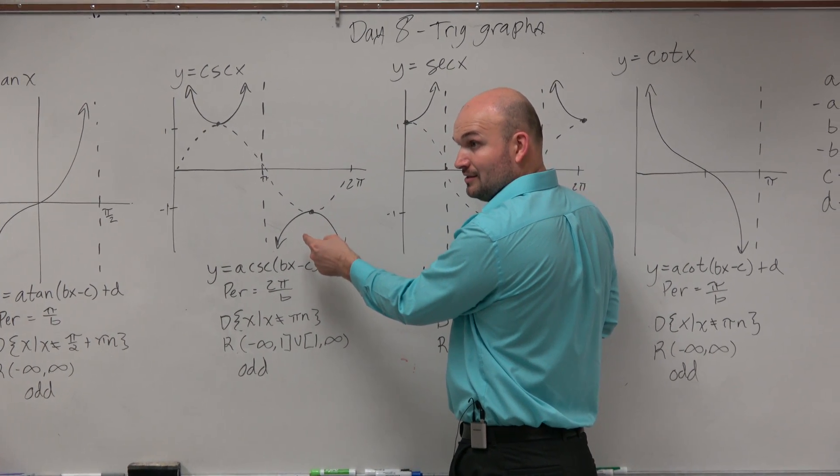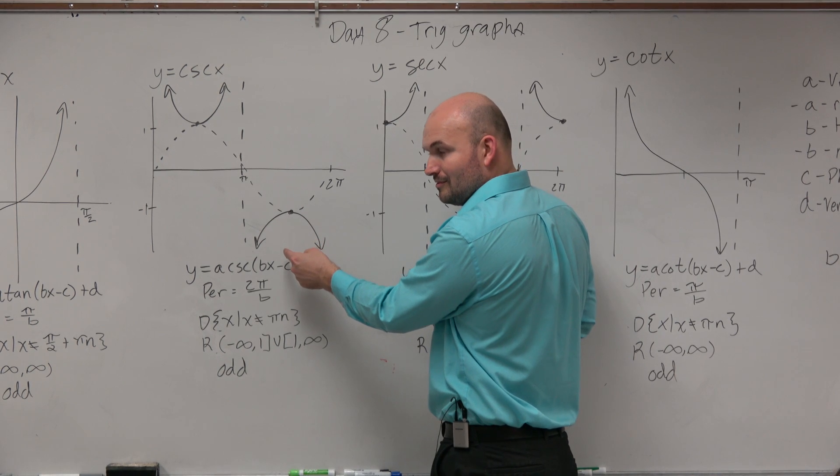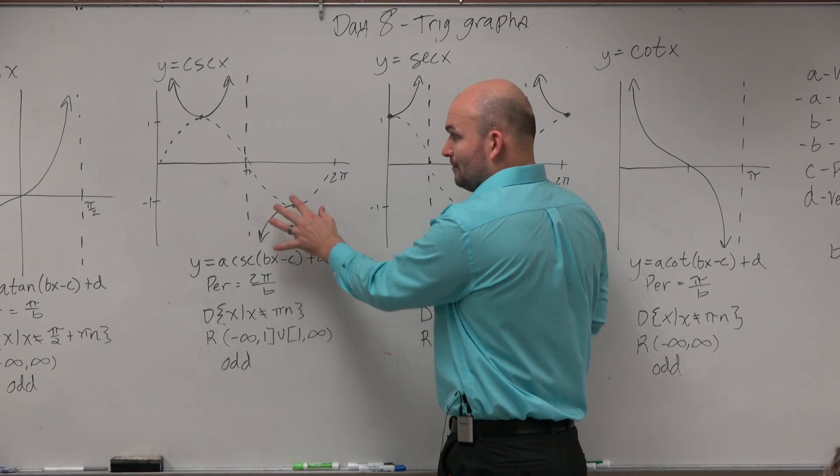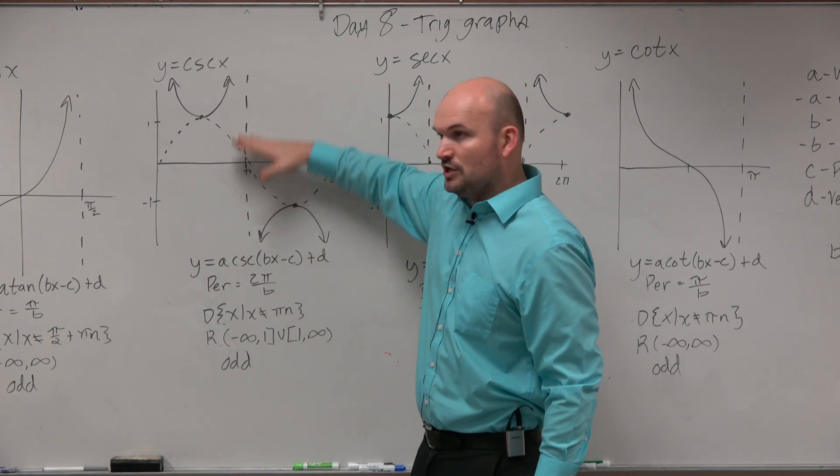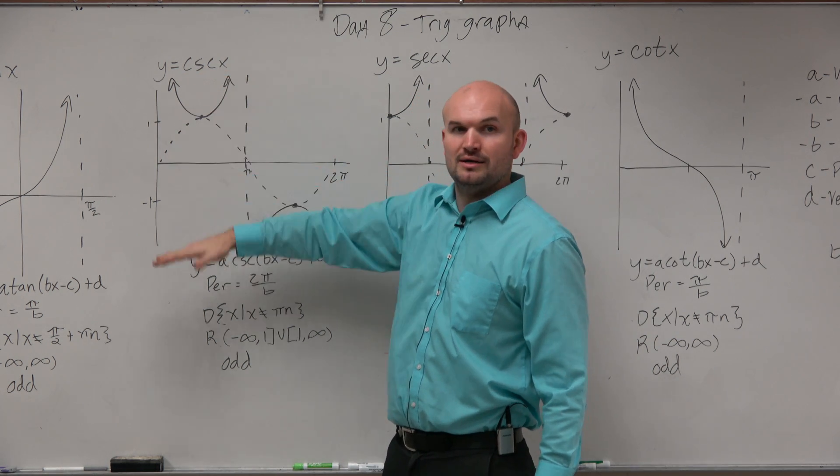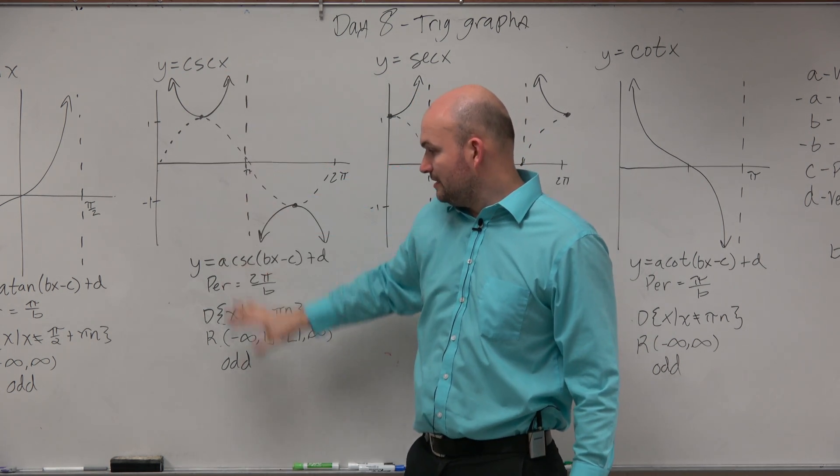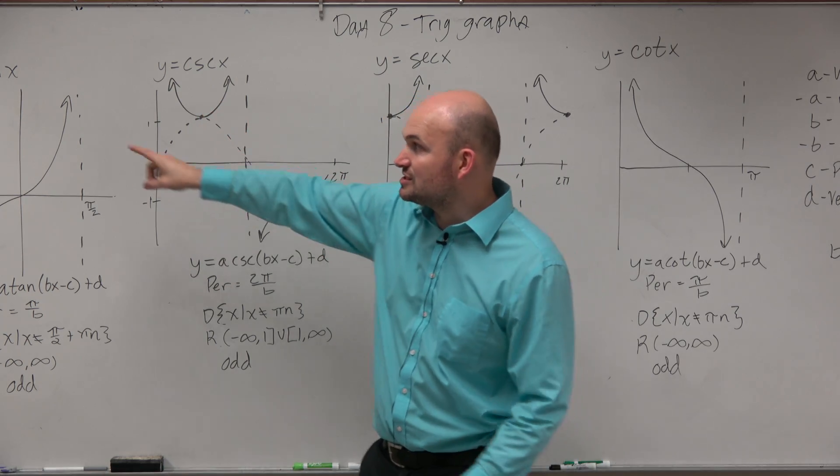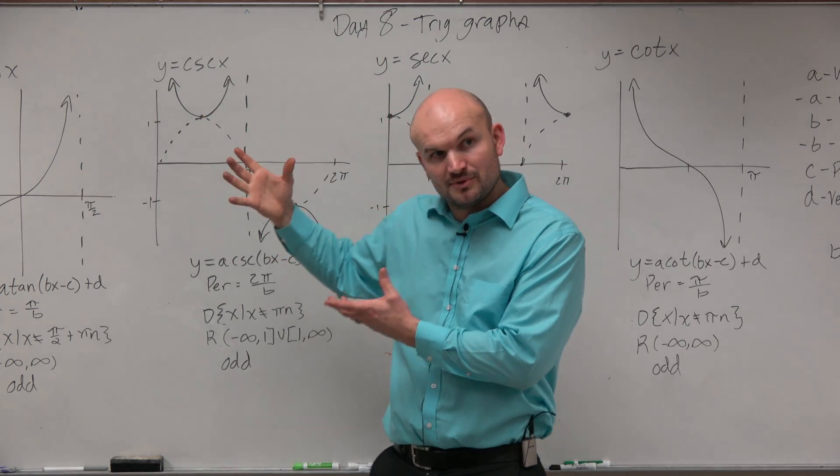It's now a relative, or a local max. And then there's nothing going on here. So we have to jump back up to 1 and then go up to infinity. OK? And this is odd, just like sine. Sine and cosecant, reciprocal functions, they're both odd.